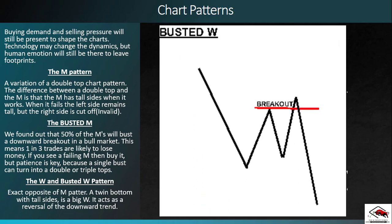Just like the busted M formation, we also have the busted W formation. When these patterns are busted, we take trades in the opposite direction. In the busted W, we would be expecting a retest of the breakout, but instead price closes below the breakout point and continues to the downside. This is the point where we start entering sell trades instead of buying — because now we have a busted W formation and you take sells instead of buys.